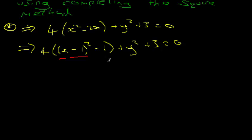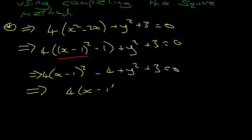And we can write this even better by expanding this bracket. So this is going to become minus 4. So this is going to be 4, just expanding the bracket, x minus 1 squared minus 4 plus y squared plus 3 is 0. So that implies that 4 times x minus 1 squared plus y squared is 1. Okay, now this is the form we want it in.